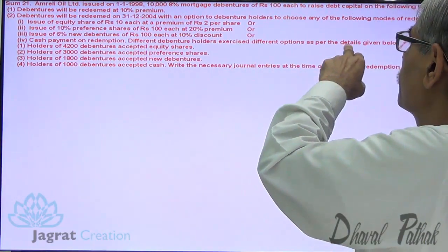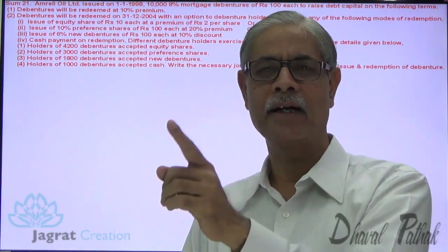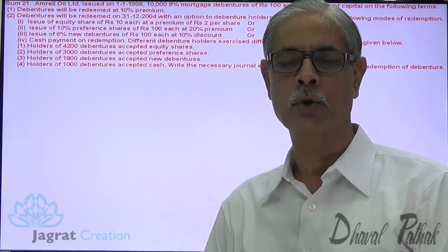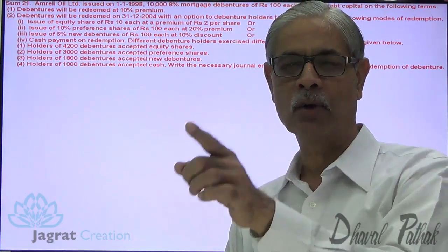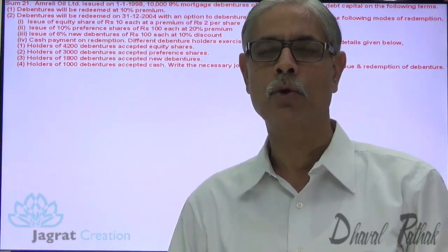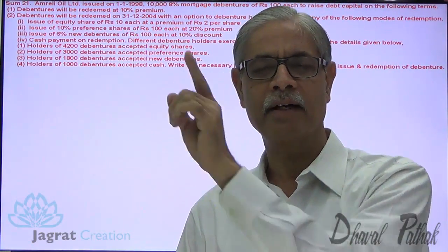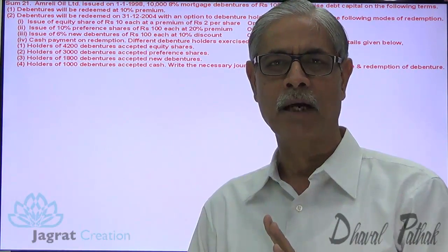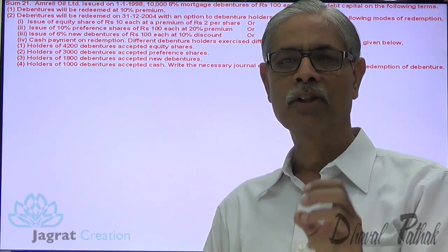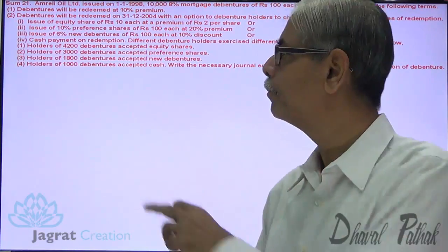Different debenture holders exercise different options as per the details given below. 4,200 debenture holders accepted equity shares, so they will be paid at the rate of 110 per debenture. The issue price of equity share is Rs. 12 each, so number of equity shares to be issued: 4,200 into 110 divided by 12 gives the number of equity shares. Next, 3,000 debenture holders accepted preference shares, so 3,000 into 110 is the total payable amount, divided by 120 gives the number of preference shares to be issued.